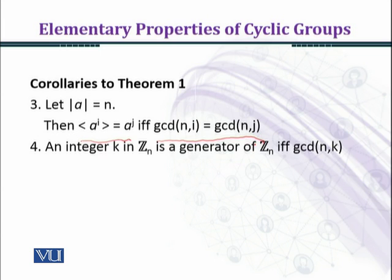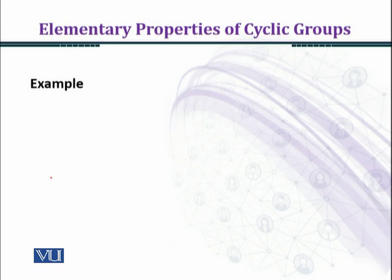An integer k in Z_n is a generator of Z_n if and only if gcd(n,k) equals 1. That is, n and k are relatively prime, then k would be a generator for Z_n. Now we consider an example.